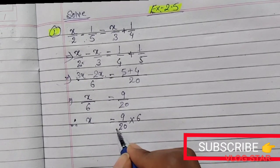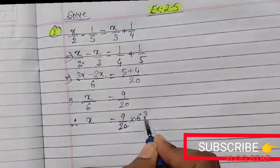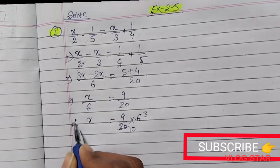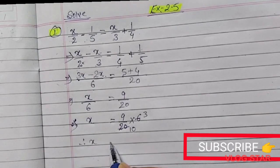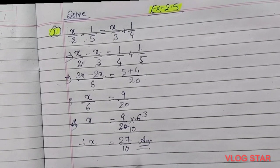If I simplify using the table of 2, 2 threes are 6 and 2 tens are 20. Therefore, x equals 9 times 3, which is 27, divided by 10. So this is our answer. Hope you get it.